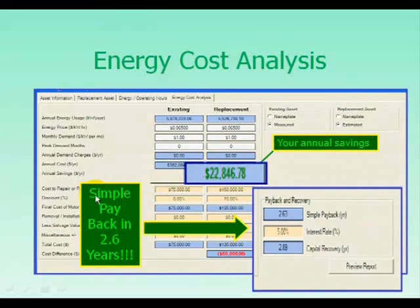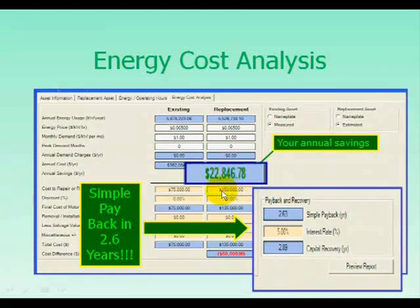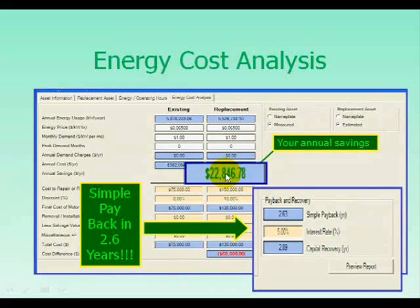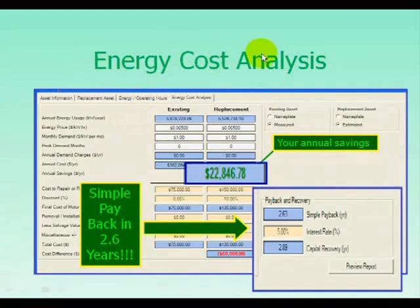This gives us a simple payback in 2.6 years and a capital recovery of 2.89 years. We have based our replacement cost at $150,000 to replace this asset versus a $75,000 repair cost. By subtracting the two and looking at our $22,846 savings, we can see that in 2.5 years we've paid for the replacement of this asset. Every year subsequent to that, you'll be saving this money towards the bottom line. In today's highly competitive world, it's important that we're looking at every avenue possible to reduce our costs.